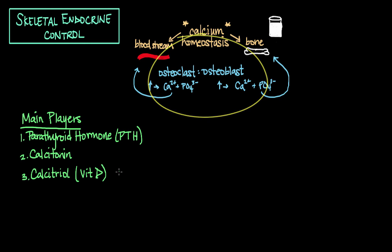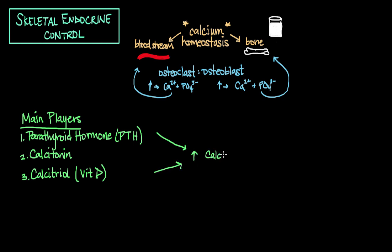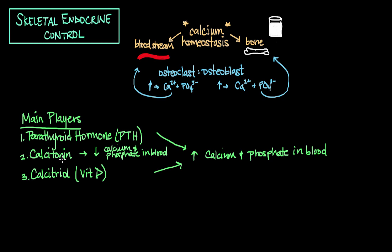Parathyroid hormone (PTH) and calcitriol have the same overall effect of increasing calcium and phosphate in the blood, while calcitonin has the opposite effect — it decreases calcium and phosphate in the blood. A helpful mnemonic: calcitonin 'tones down' the calcium in the blood. Each time calcium increases in the blood, there is a concurrent increase in phosphate — they go together — and the same applies when calcium decreases.